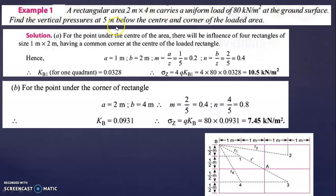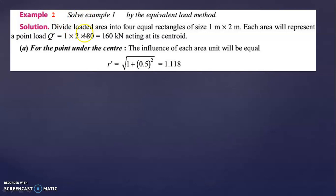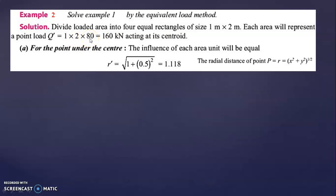So we have found the vertical stress at 5 meter below the center and the corner of the loaded area. Next, let us solve the same problem using another method — the equivalent load method. Same example but a different method. First, divide the loaded area into four equal rectangles of size 1 meter by 2 meter. Each area will represent a point load q' = area × load intensity.